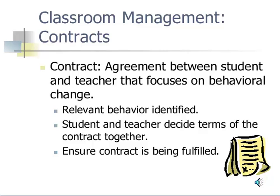Contracts are an effective way of helping students focus on changing an undesirable behavior. The agreement between the student and the teacher should focus on the behavioral change. The relevant behavior should be identified, and together the student and teacher should decide on the terms of the contract. Teachers and parents work together to ensure that the contract is being fulfilled. For example, a contract can help a student who is not completing homework assignments. The teacher and student design a contract agreeing that the student will stay for extra help, ask parents for help, and complete the assigned work on time. The teacher will be available after school and during free periods for additional assistance.